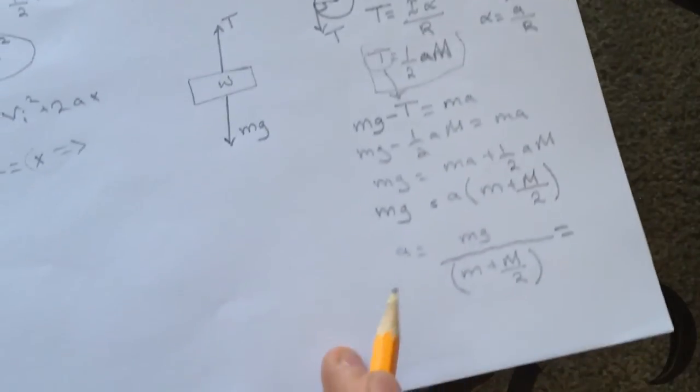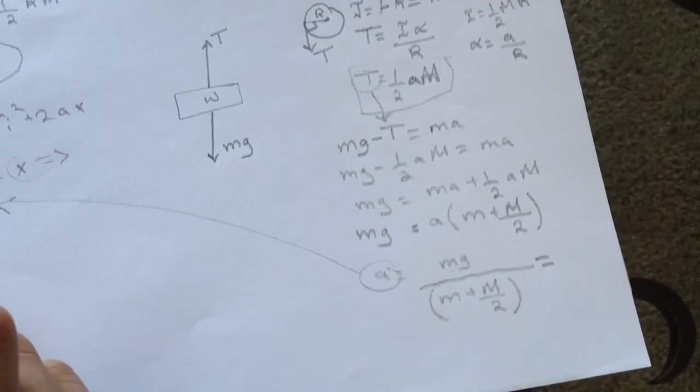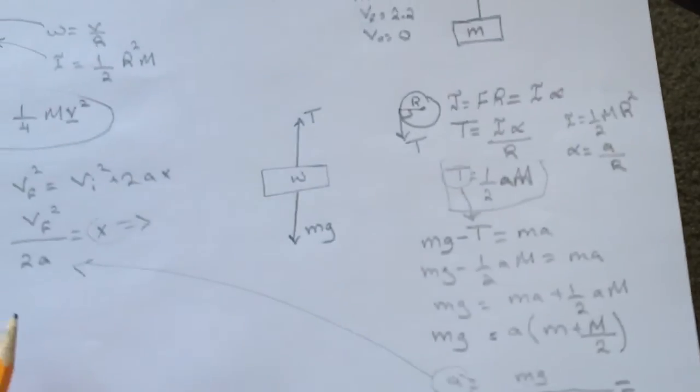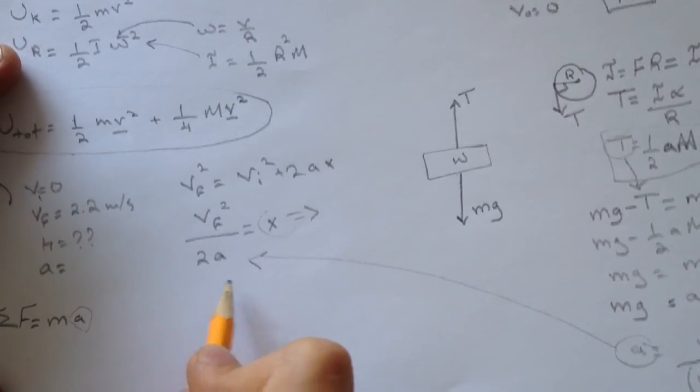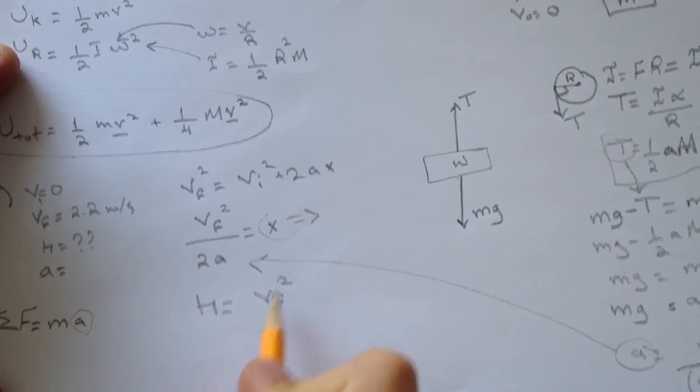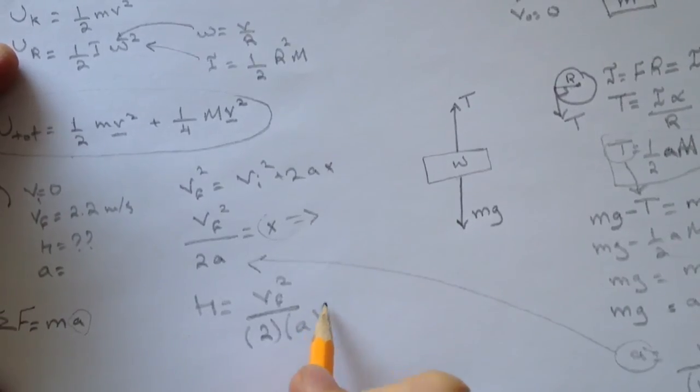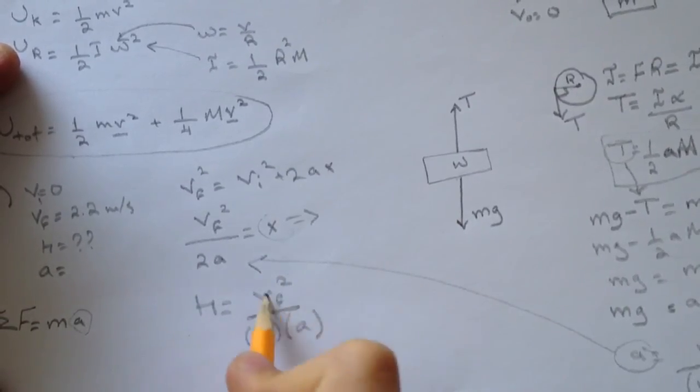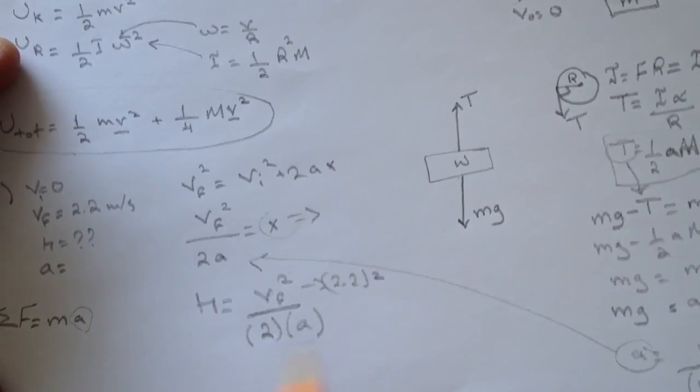Put it in this equation and you'll get the height. Height equals v squared over 2 times the a value you got here. This is just 2.2 squared and you'll get the value.